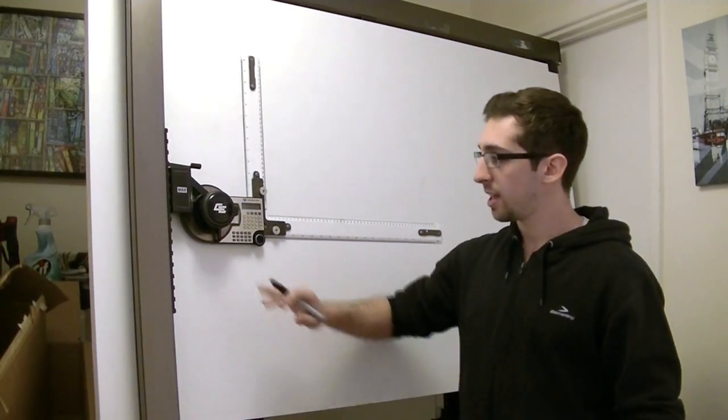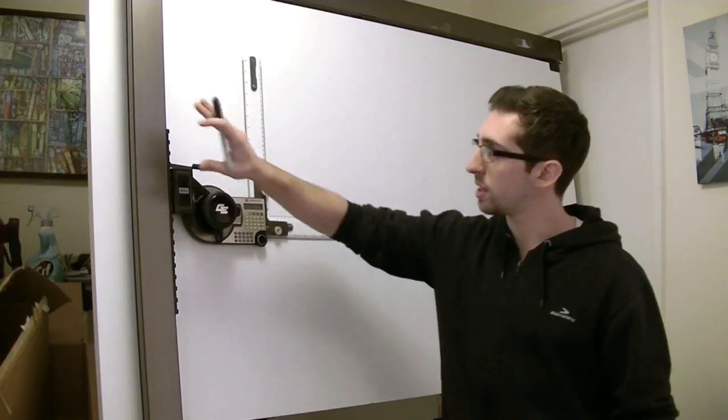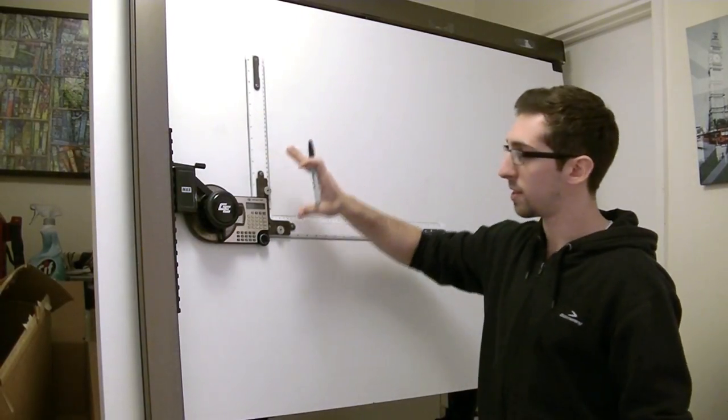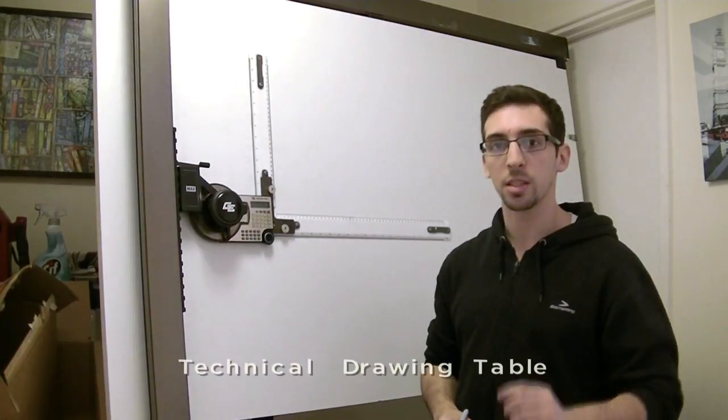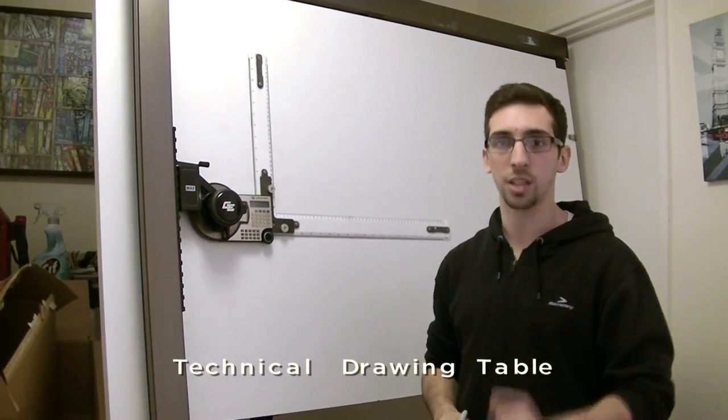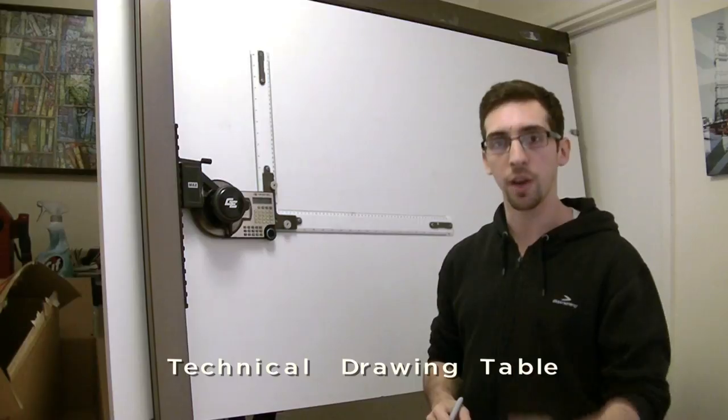In conclusion, the technical drawing table with the two rails, two rulers, scientific calculator, and protractor makes the perfect solution for architects and designers, making their work easier, faster, and cleaner.